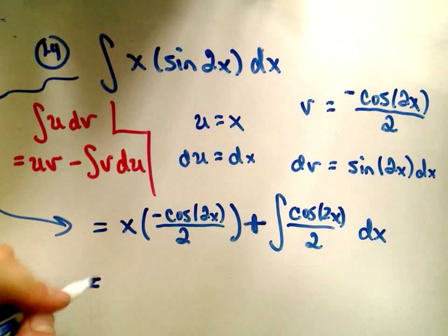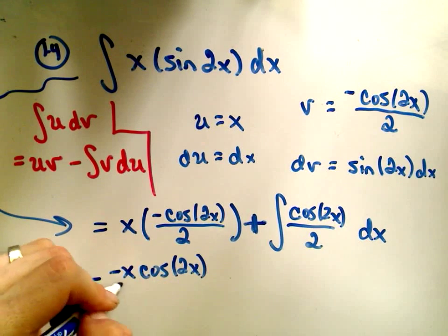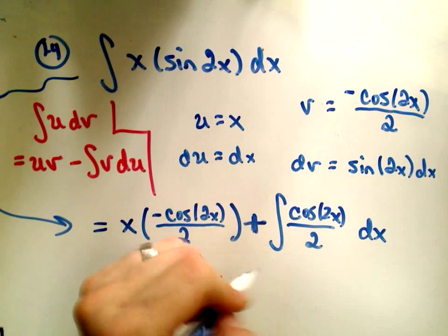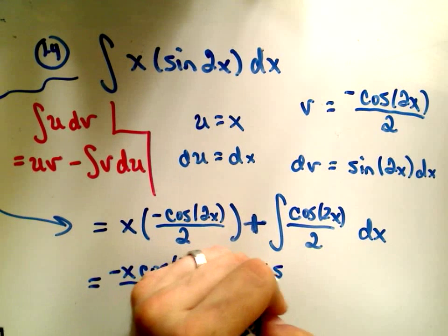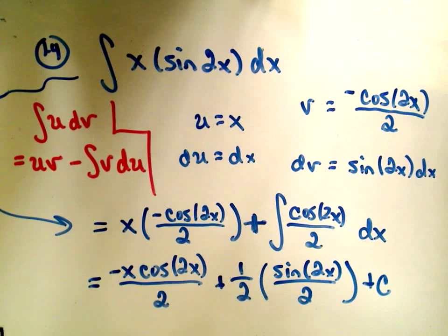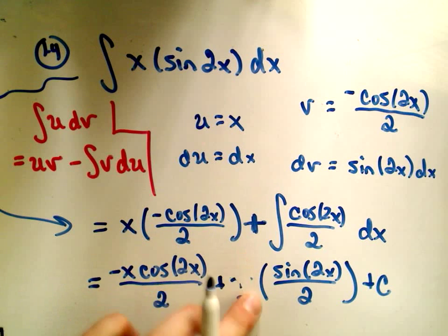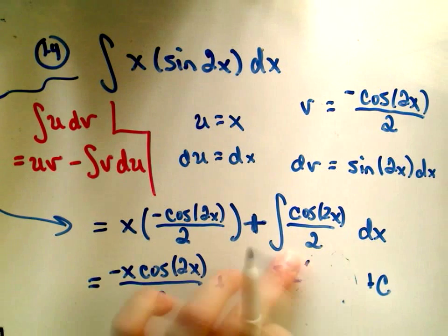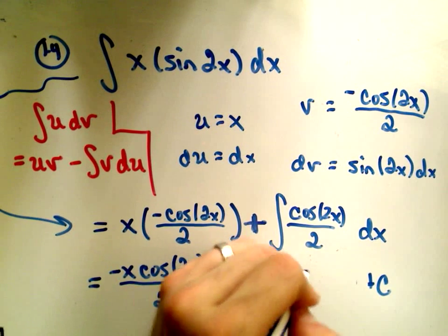So, now we're almost there. I'm going to write this as negative x cosine of 2x over 2 for the first part. I can pull the 1 half out front. If you integrate cosine of 2x, we'll get sine of 2x over 2 plus c. Looking at their solutions, they basically multiply the 1 half and the 1 half, and they pull that out front. So, they write this last part simply as 1 fourth sine of 2x.